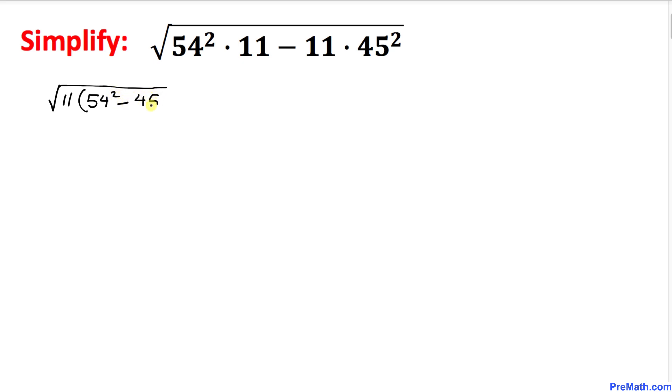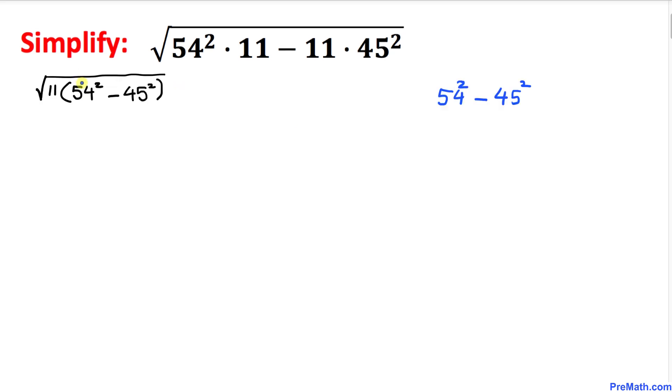Now let's go ahead and focus on inside this square root, this part only: 54 squared minus 45 squared. I have copied it down over here, and as we can see, this represents the difference of two squares. So therefore we are going to use this formula: a squared minus b squared equals (a minus b) times (a plus b).